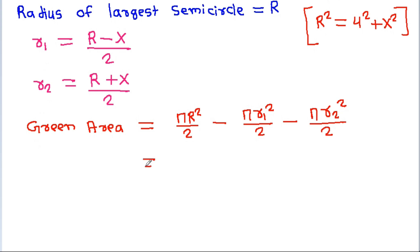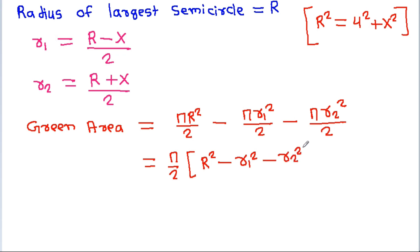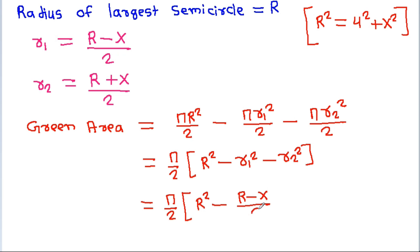And we can take π/2 common, giving R² minus R1² minus R2². It is (π/2) times R² minus (R minus X)/2 squared.